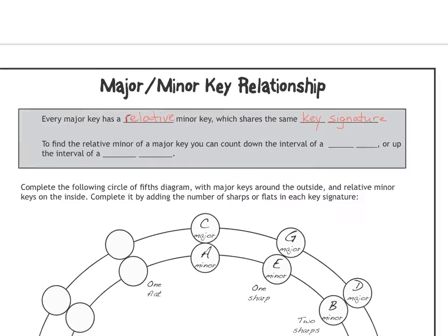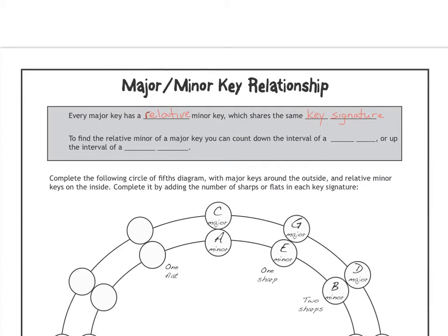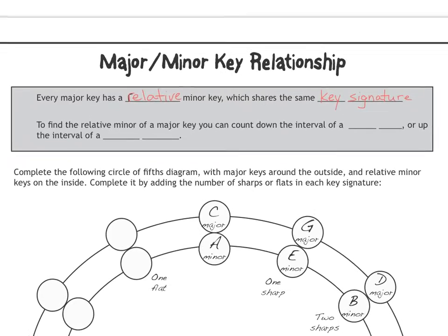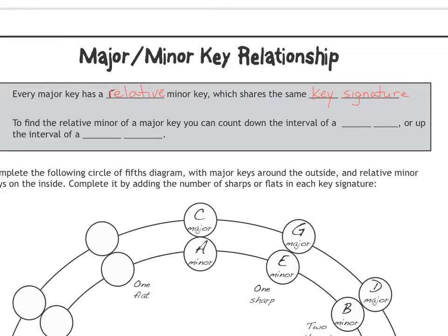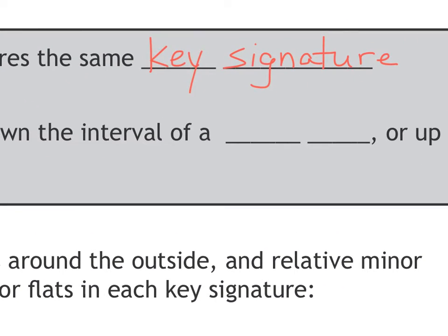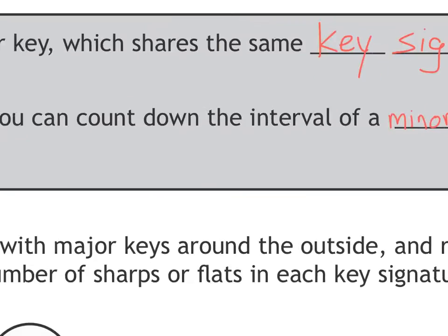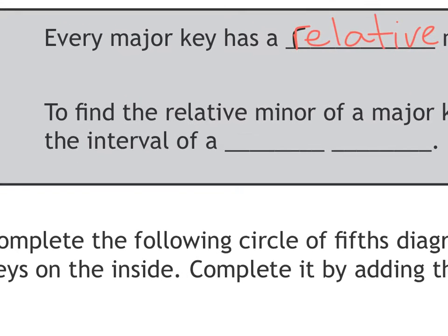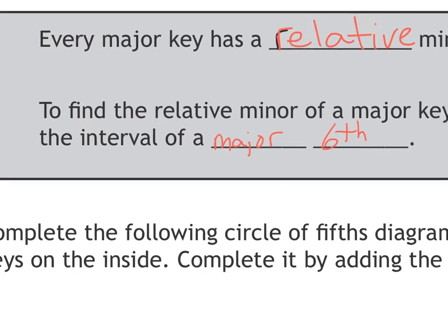To find the relative minor of a major key, you can count down the interval of a what, or up the interval of a what? You can count down the interval of a minor third, or up the interval of a major sixth. Either way will get you to the same letter name.